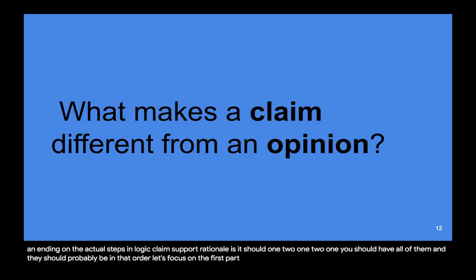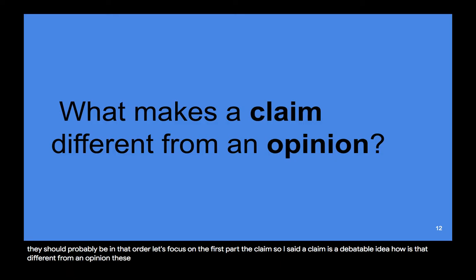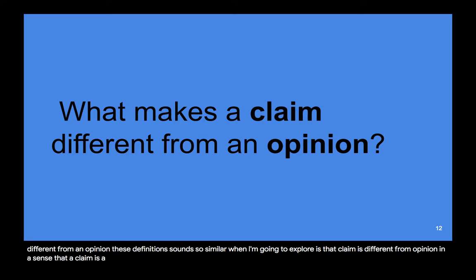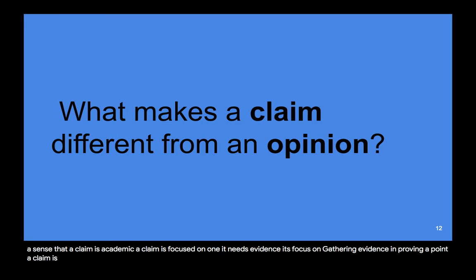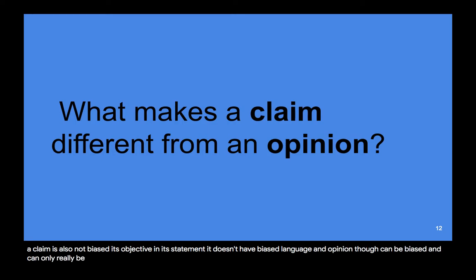Let's focus on the first part: the claim. A claim is a debatable idea. How is that different from an opinion? These definitions sound similar. A claim is academic — it needs evidence, it's focused on gathering evidence and proving a point. A claim is also not biased; it's objective in its statement and doesn't have biased language. An opinion, though, can be biased and is only grounded in personal preference.